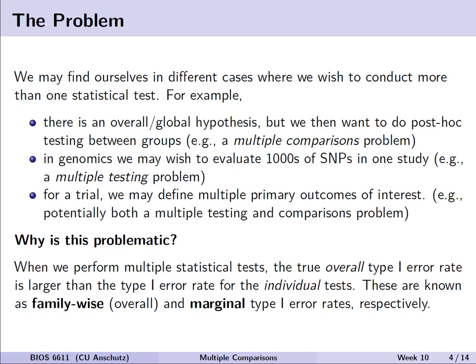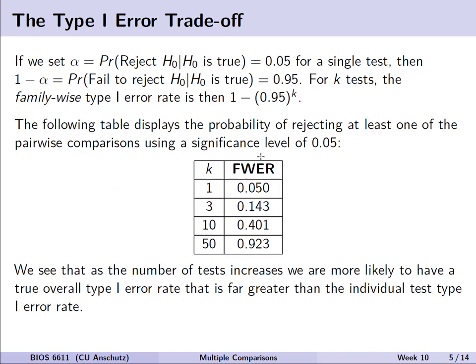Why would this actually be problematic? Why can't I just do tests willy-nilly? When we perform multiple tests, the true overall type 1 error rate is larger than the type 1 error rate for any individual test alone. We can call these concepts family-wise and marginal type 1 error rates respectively, where sometimes we use family-wise and overall interchangeably.